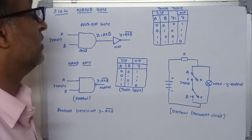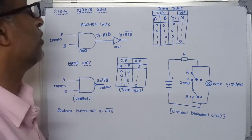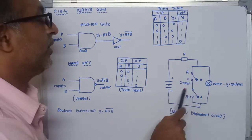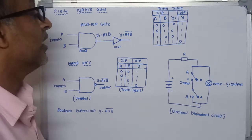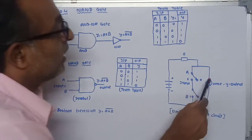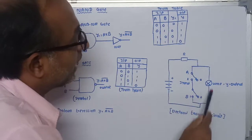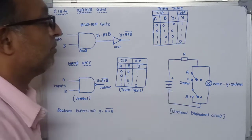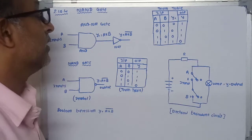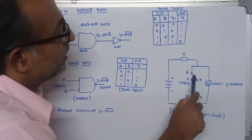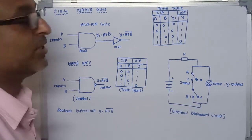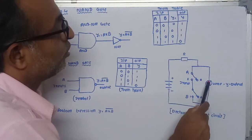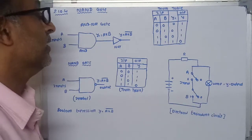Now let us see the electrical equivalent circuit of the NAND gate. Here there are two two-way switches — one acts as input A and another acts as input B — which are connected in series. One lamp is connected in parallel with switches A and B, and this whole combination is connected across the supply voltage V.